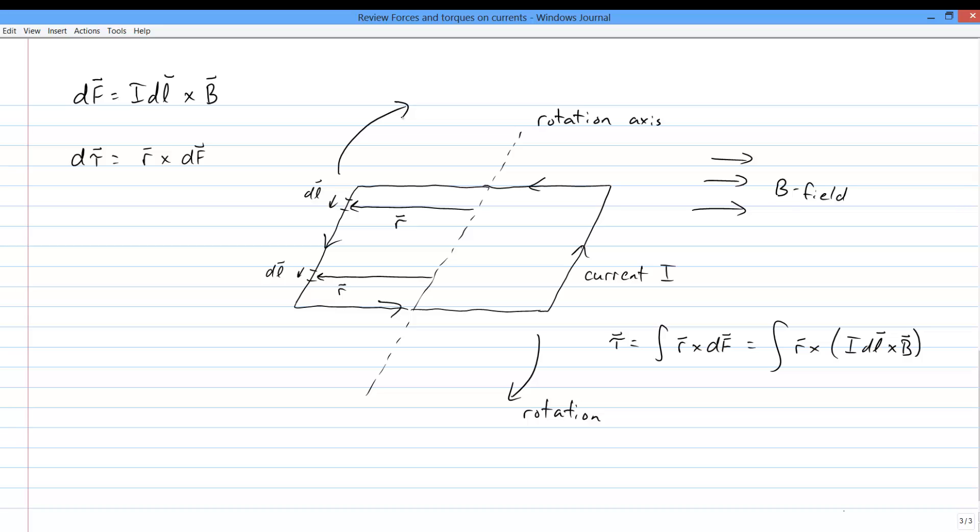Now, D Tau is R cross DF is a fundamental definition and is always true. Sometimes, not always but sometimes, there's a shortcut equation that works.